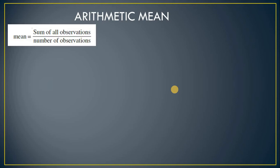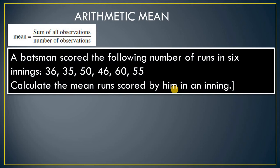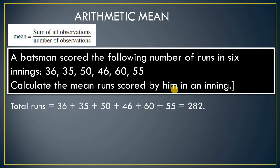Arithmetic mean is also known as average. It is calculated as the sum of all observations divided by the number of observations. Example: a batsman scored the following numbers of runs in six innings — calculate the mean, or average run scored by him in an inning.